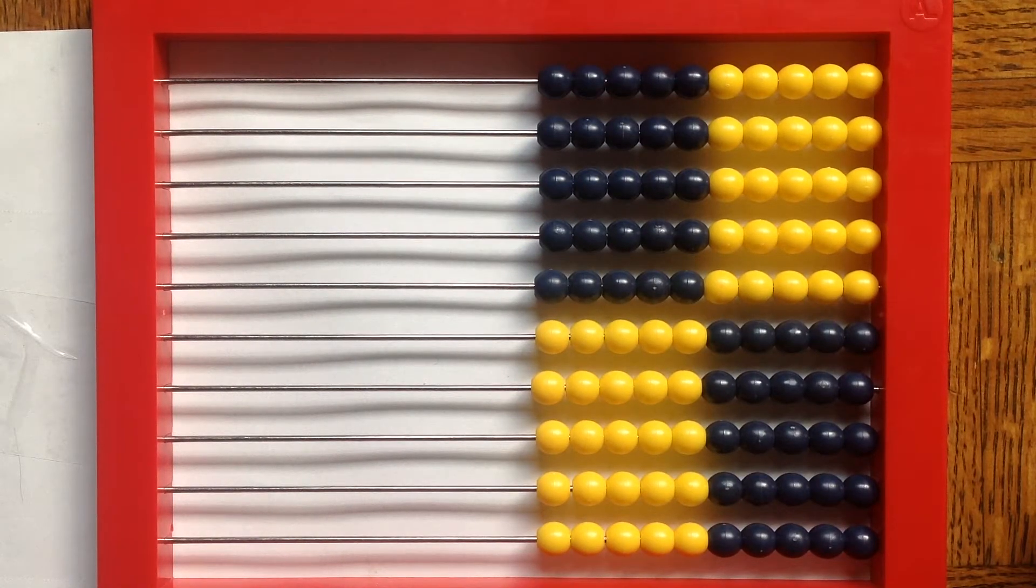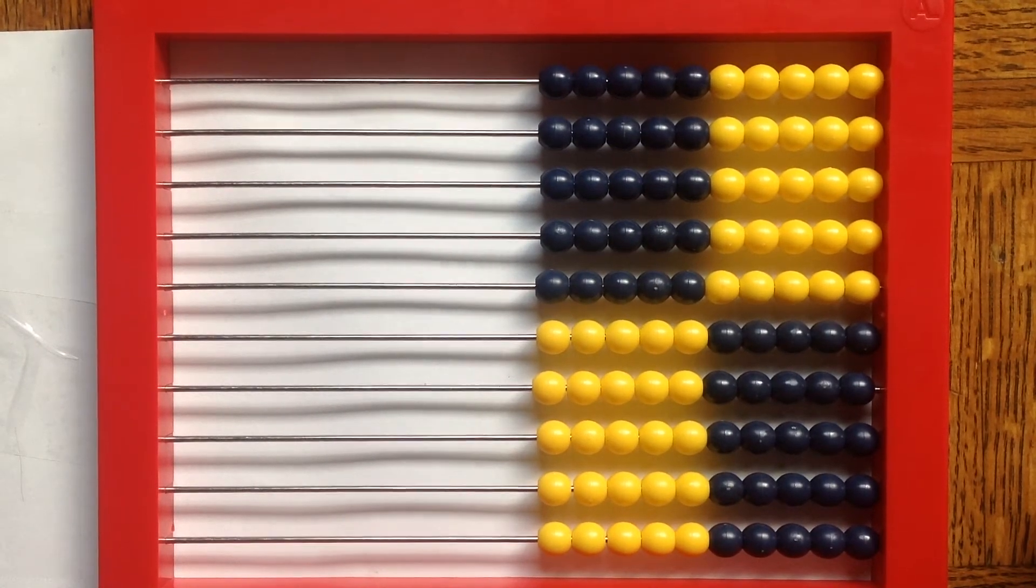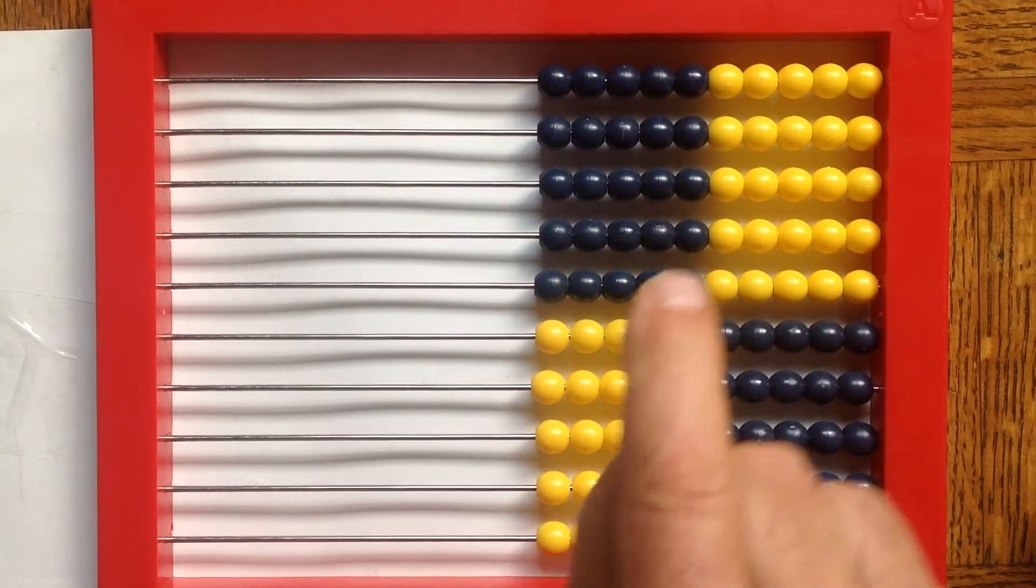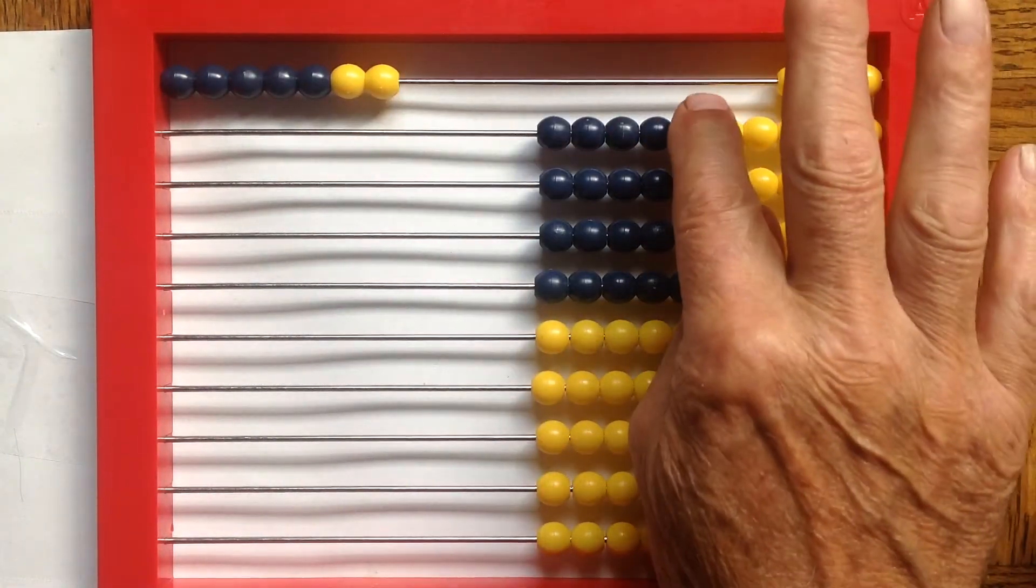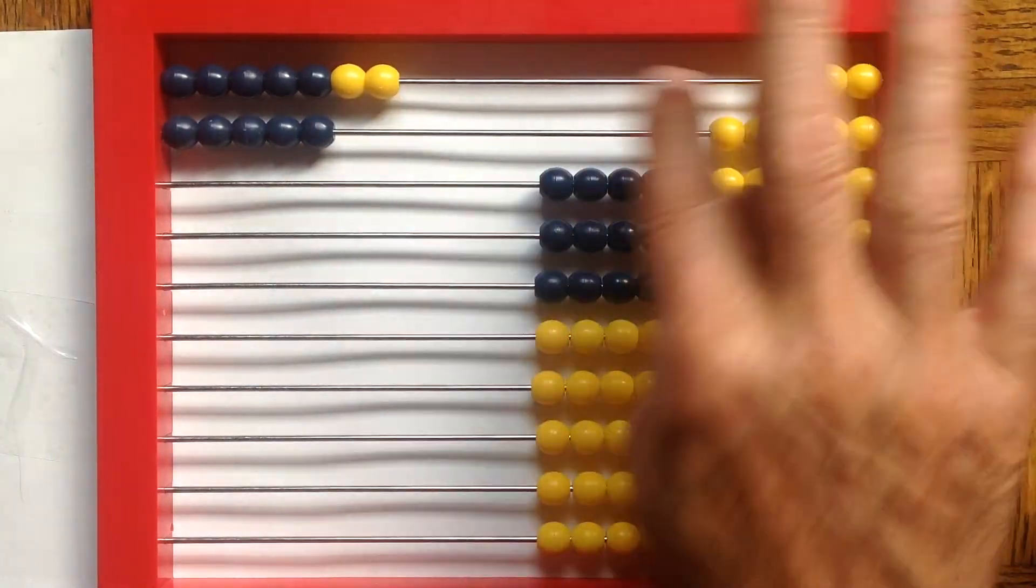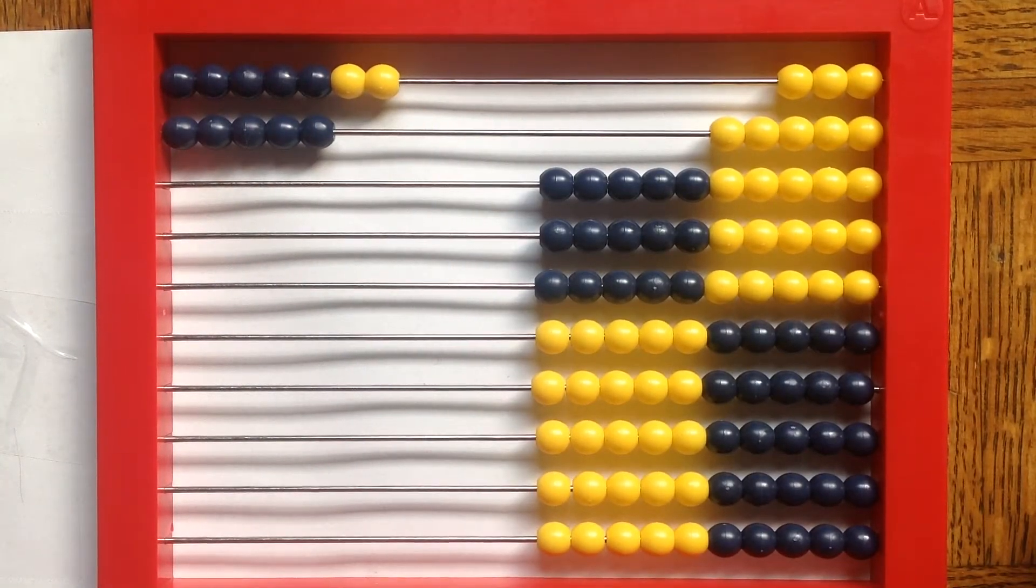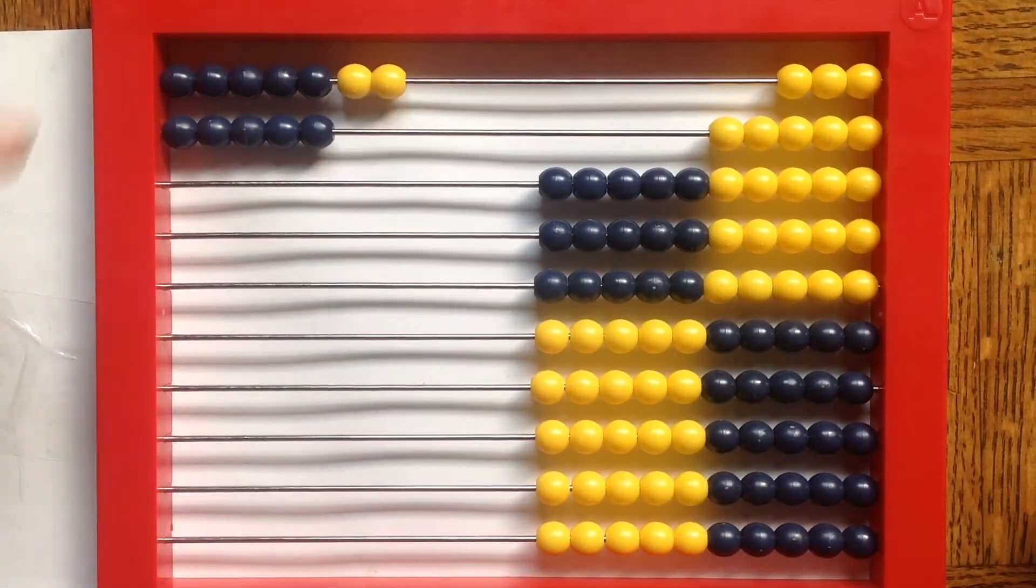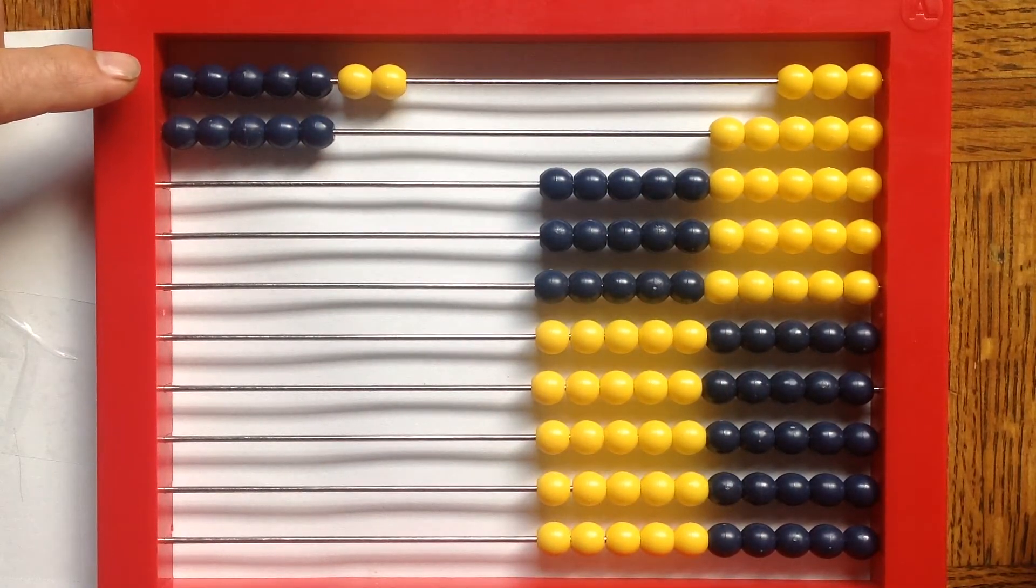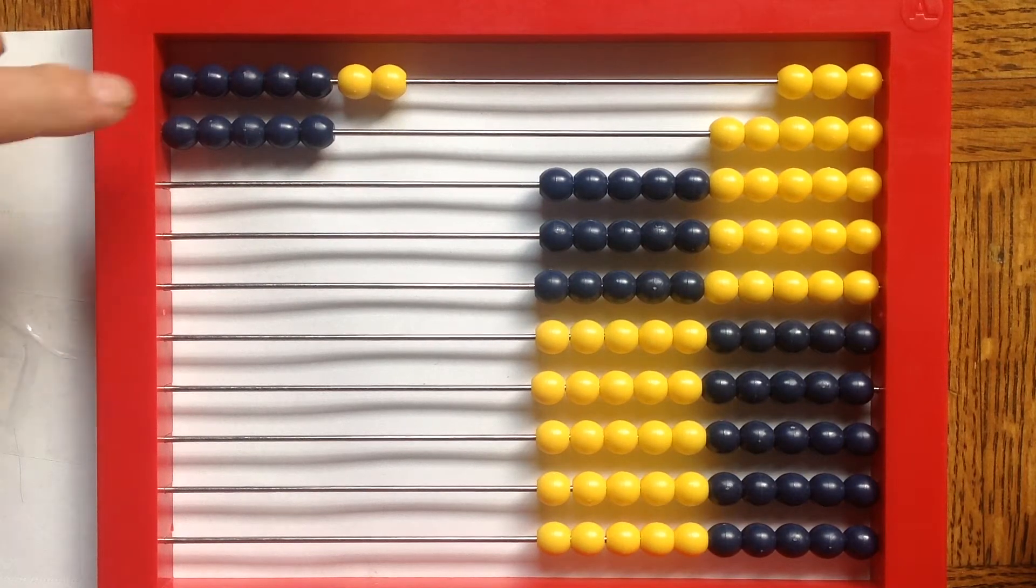All right, here's our friend, the 10 by 10 abacus. And let's take and put seven and five. All right, what's beautiful about that, when you put this out here, you can visualize that that's really nothing more than five, five, which is ten, and two.